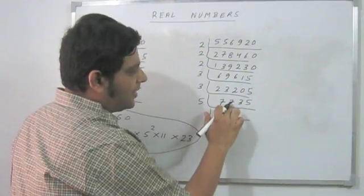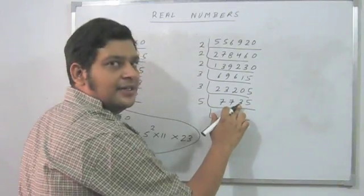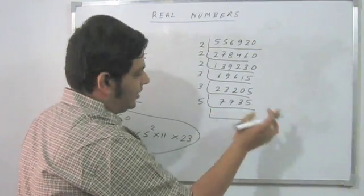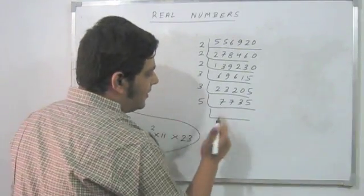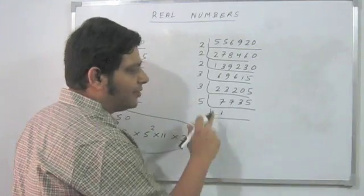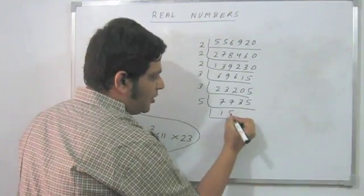Or should I check for 3? 7 and 7 is 14 and 3, 17 plus 5, 22, it is not. I will try the next prime which is 5. 7 when I divide by 5, 27 is left which gives me 5, 23 is left which gives me 4, and 35 gives me 7.